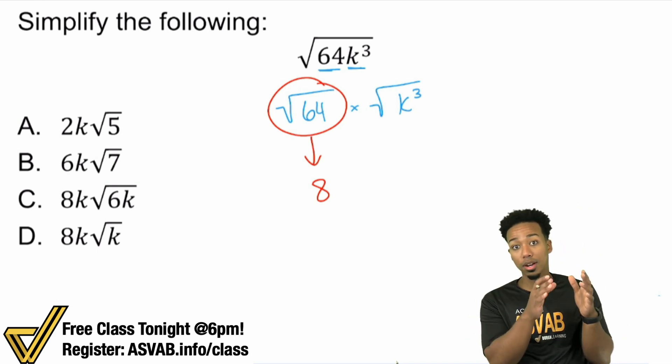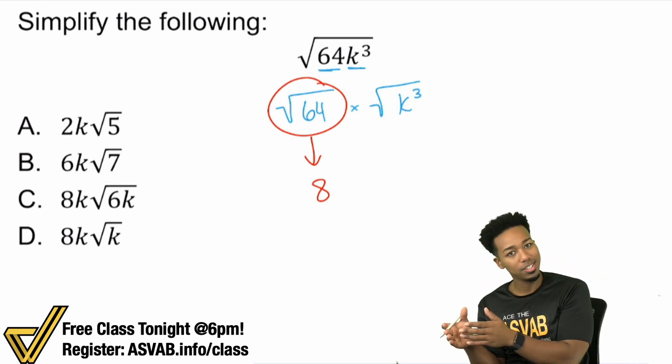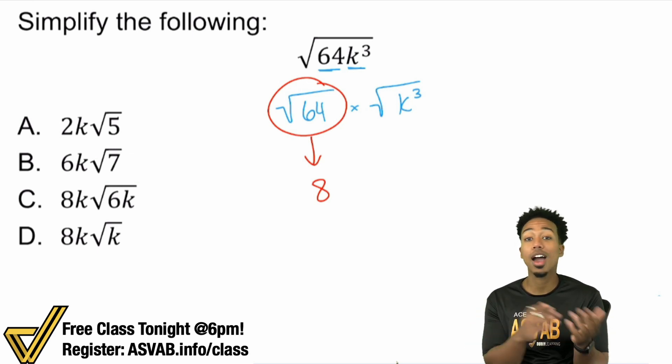Well, remember what the square root does is it pretty much undoes a perfect square. So if you have 3², that's 9, the square root of 9 is 3. So you see that they're inverse operations, they're opposites of each other.